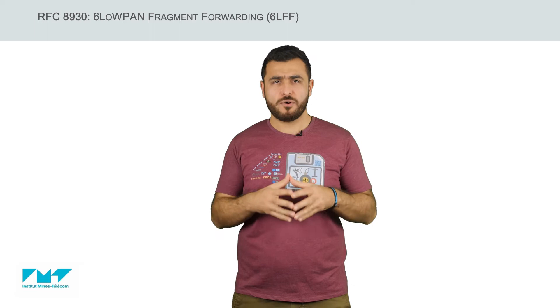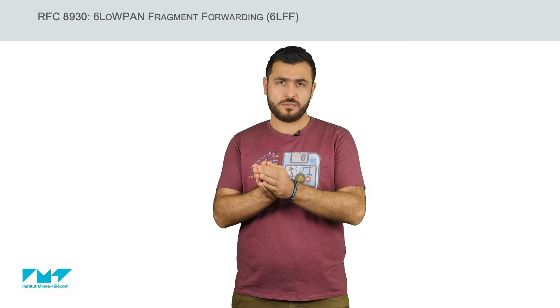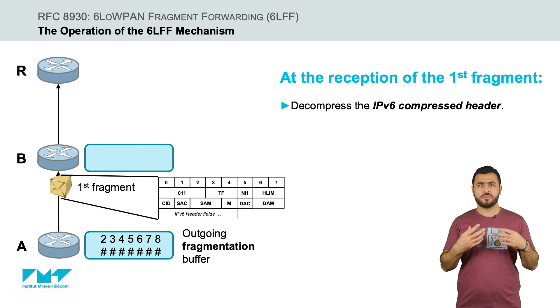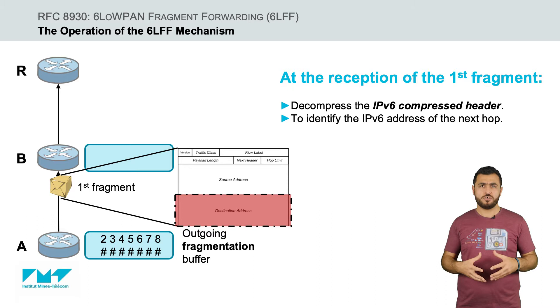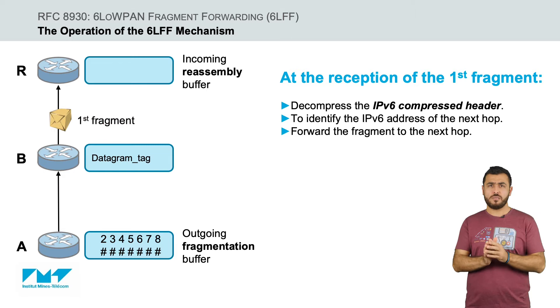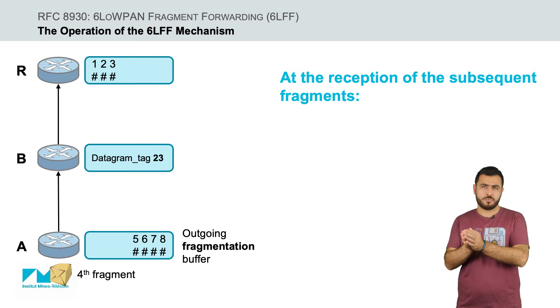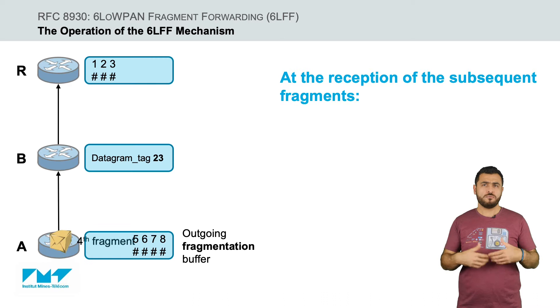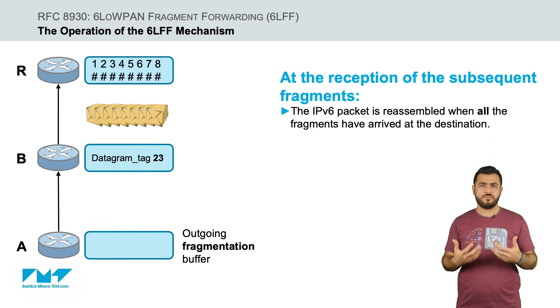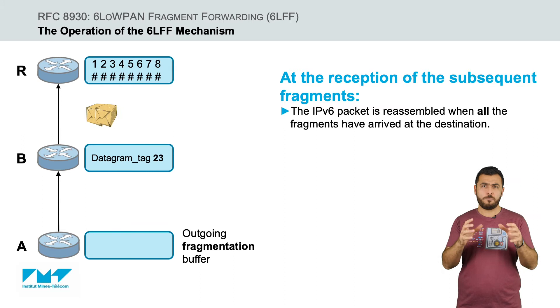6LFF was published in November 2020 and it is defined in RFC 8930. The core idea of 6LFF is: when receiving the first fragment of an IPv6 packet, an intermediate node decompresses the IPv6 header to determine the next hop according to the destination IPv6 address in that fragment. It then forwards that fragment immediately to that neighbor and remembers the datagram tag of that fragment. When receiving subsequent fragments of the same IPv6 packet which have the same datagram tag, the node forwards them to the same next hop. Once all the fragments have successfully arrived at the destination node, only then is the IPv6 packet reassembled.